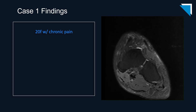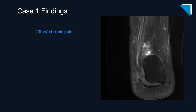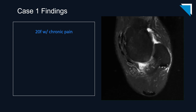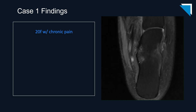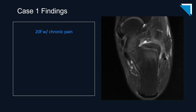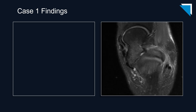Remember to pause the video if there is a particular image you want to scrutinize. Let's scroll through the fluid-sensitive axial images. This is a single image from the axial fluid-sensitive sequence which demonstrates patchy periarticular bone marrow edema, as well as irregular narrowing and subtle sclerosis of the middle subtalar joint.